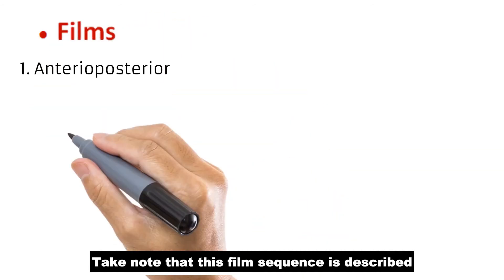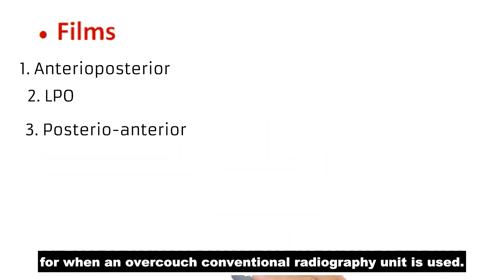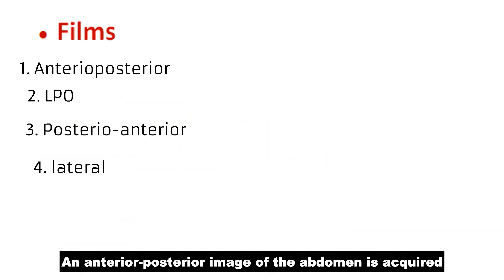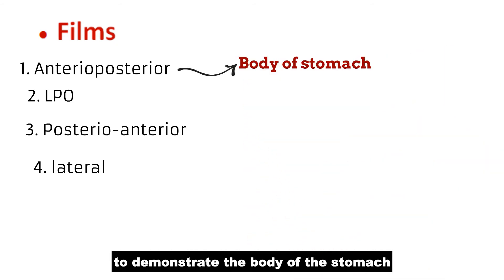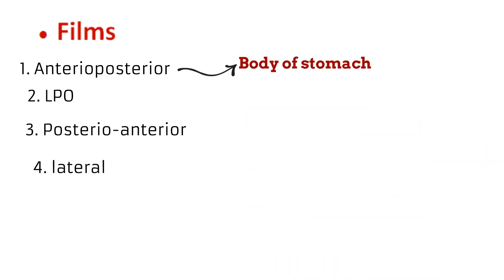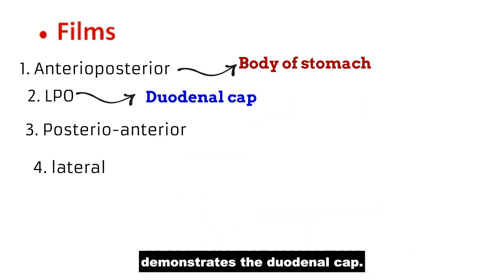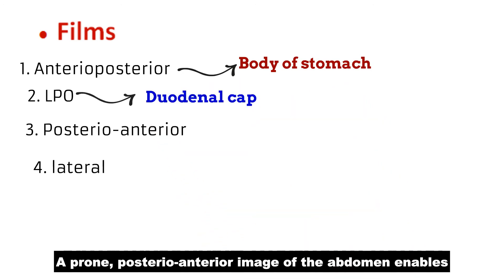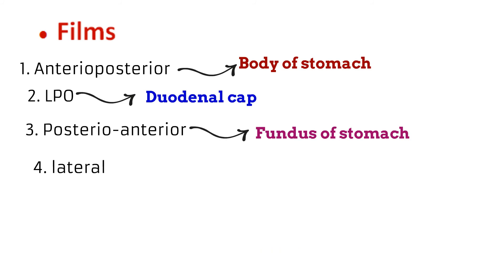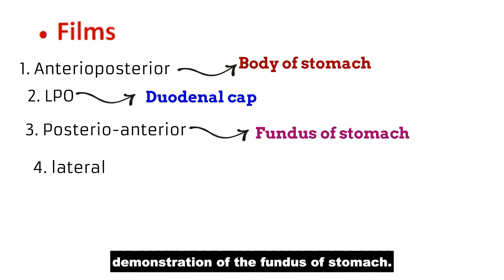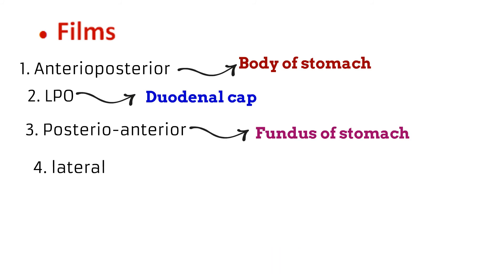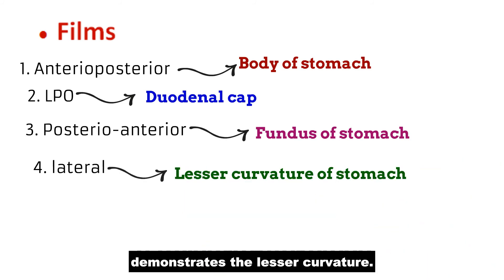Take note that this film sequence is described for when an over-couch conventional radiography unit is used. An anteroposterior image of the abdomen is acquired to demonstrate the body of the stomach along with its lesser and greater curvatures. A left posterior oblique image of the abdomen demonstrates the duodenal cap. A prone posteroanterior image of the abdomen demonstrates the fundus of the stomach. A lateral image of the abdomen demonstrates the lesser curvature.